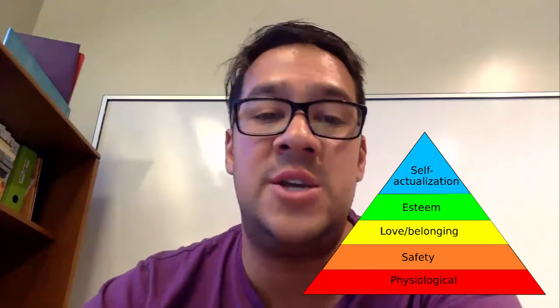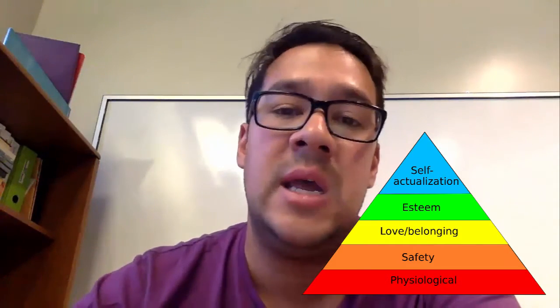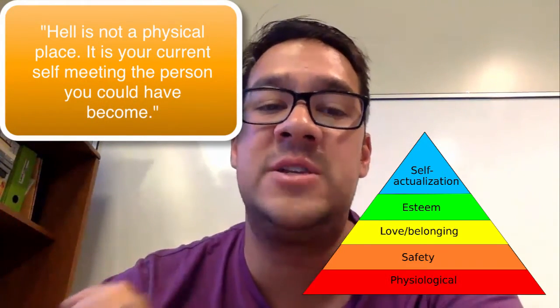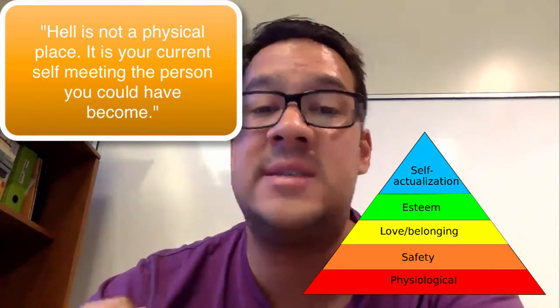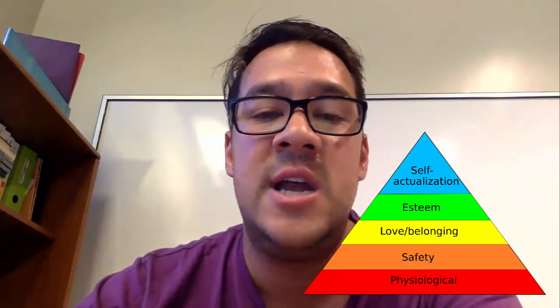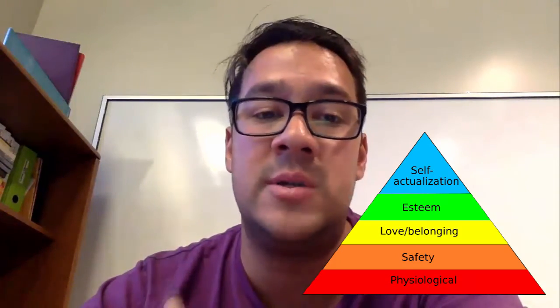In the final stage is what Maslow refers to as self-actualization. Think of this quote: what you think you can be, you must be. In other words, the best person that you think you can be is what you should become. Another good quote: hell is not a physical place — it is your current self meeting the person that you could have become. This final stage is when the person realizes their fullest potential, whether at their job, as a parent, or as a team player on a sports team.